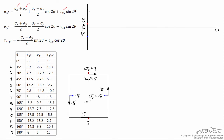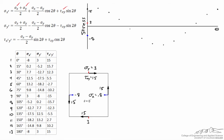At theta equals zero, tau xy is equal to 15, sigma y is equal to 3, and sigma x is equal to negative 8. Here are the rest of the data points for tau xy, and if I draw a smooth curve through these I get a sinusoid for tau xy — and we'll see the same thing for sigma x and sigma y.